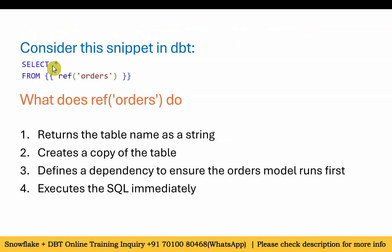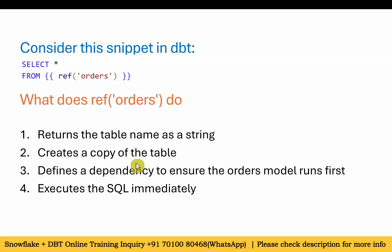Consider this statement in DBT: `SELECT * FROM {{ ref('orders') }}`. What does this reference to orders do? Options: returns the table name as a string, creates a copy of a table, defines a dependency to ensure the orders model runs first, or executes SQL immediately. The answer is three: it defines a dependency to ensure the orders model runs first before the select statement executes.